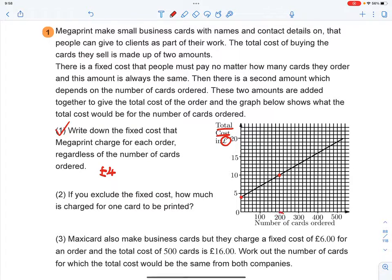If you go down, you got 200 number of cards. And if you go left, you got 10 pounds. So I will use 10 pounds, take away four pounds. So that gives me six pounds. And that means I need to pay an extra six pounds to get 200 cards.